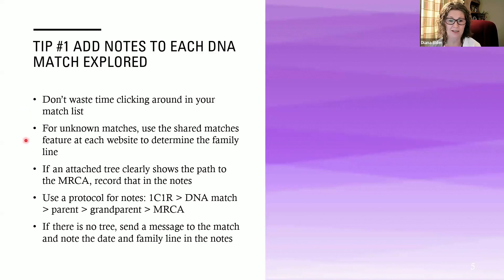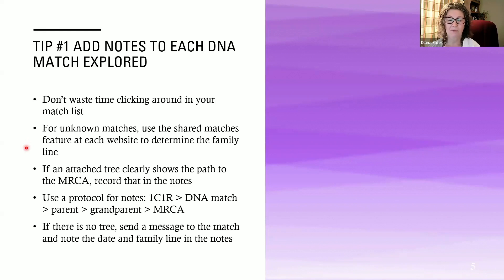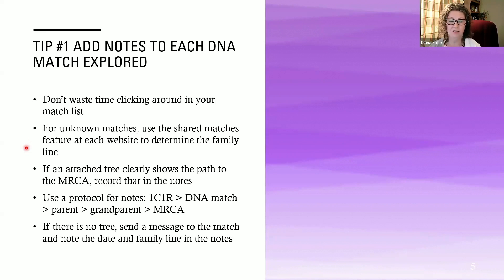For your unknown matches, use the shared matches feature to determine the family line. Even if you can find only that it's paternal or maternal, or if you have a very broad idea of where that match fits, get that into your notes. Ancestry will do the bucketing for you and tell you maternal or paternal once you've assigned that, but some of the other websites don't do that. So if you look at shared matches and you are a shared match with your first cousin on your maternal side, you can start assigning that mystery match as just maternal.